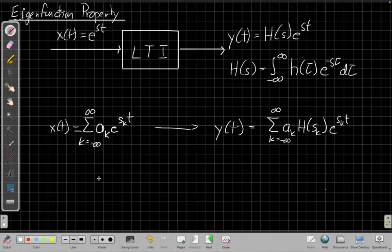But for the eigenfunction property again says that if we have an exponential signal e to the st into a linear time invariant system, the output of the system y of t will be the same exponential, e to the st, scaled by some gain h of s that we call the system function.